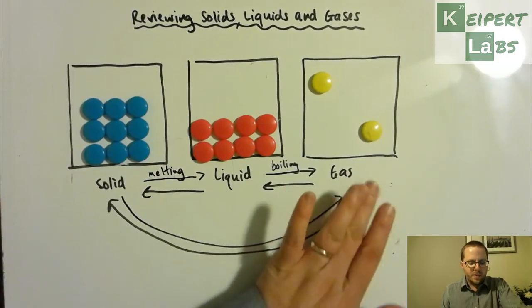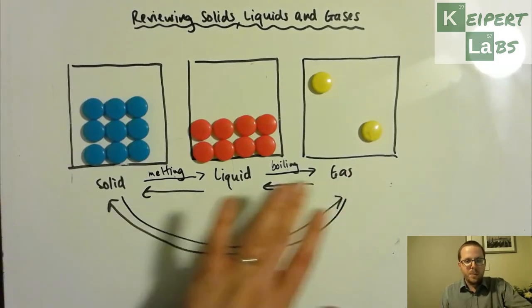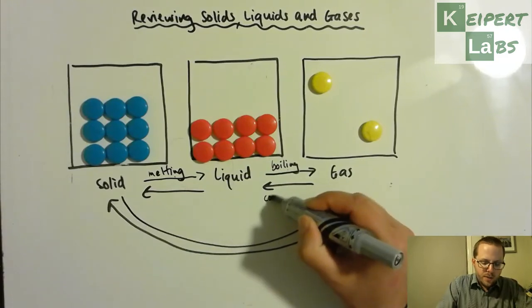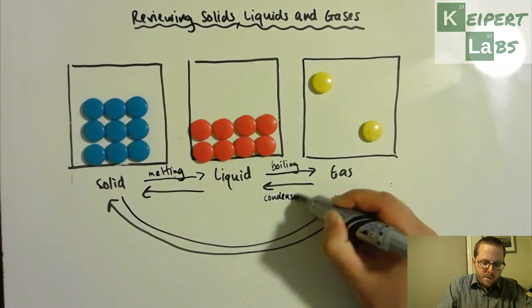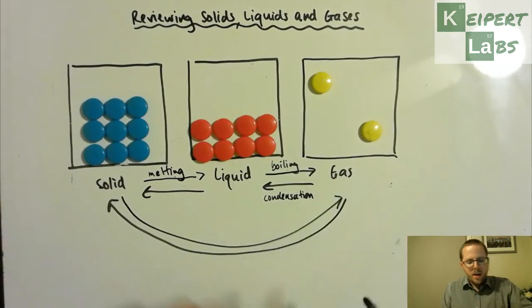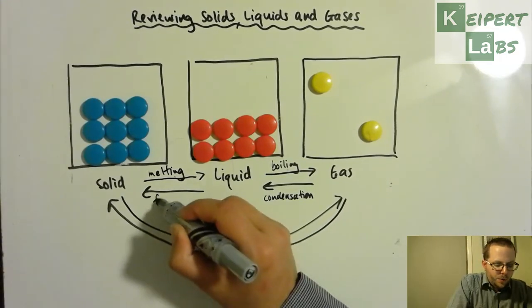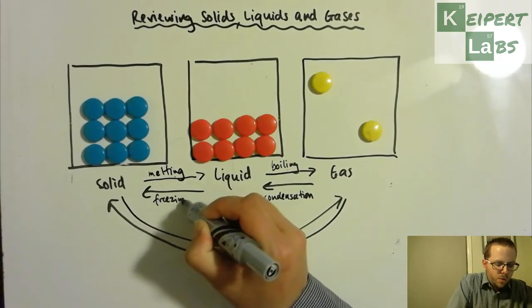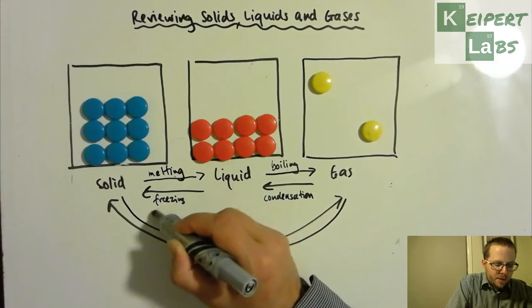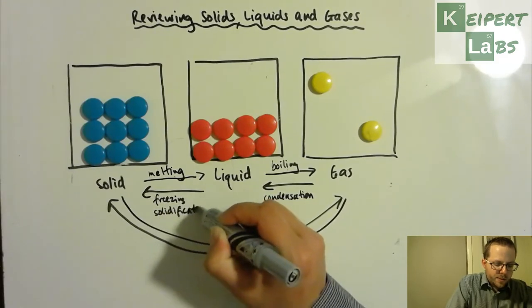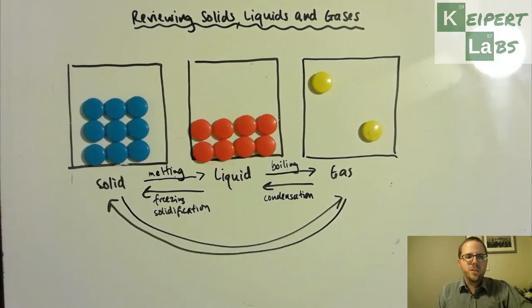If we start at this end and work our way backwards, and so we take energy out, we're cooling it down, to go from gas to liquid is condensation. If we continue to do so, to go from liquid back to solid, we would call it freezing, or perhaps a slightly better, more scientific way would be to say solidification, the making of a solid.